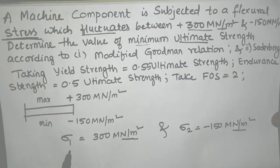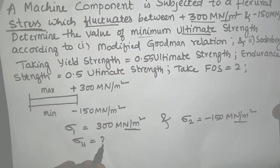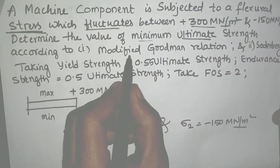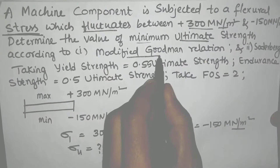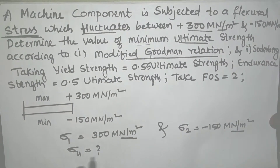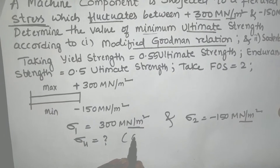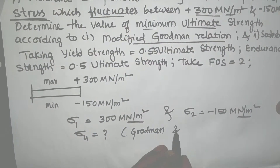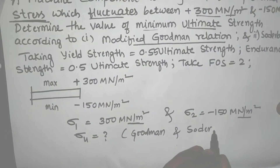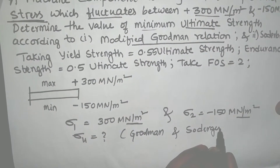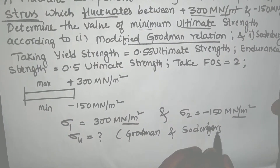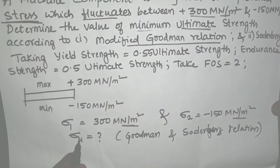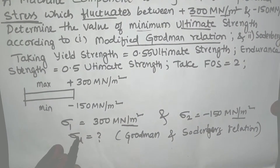We need to calculate the minimum ultimate strength, Sigma_U, for this problem. According to the problem, there are two methods: one is the modified Goodman relationship, and the other is the Soderberg equation. Using both relations, we have to calculate the same ultimate strength.